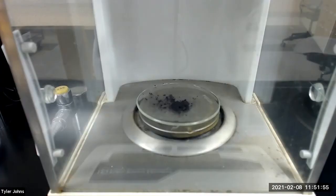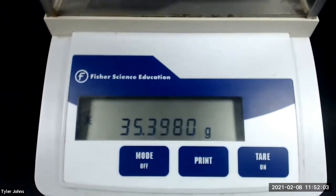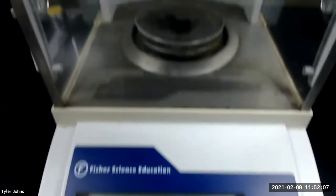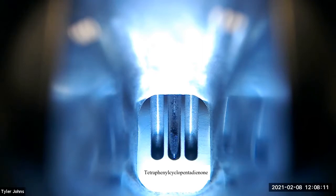After drying, the mass of the pre-weighed watch glass and the tetraphenylcyclopentadienone product is 35.3980 grams. We will now perform a melting point determination of tetraphenylcyclopentadienone.